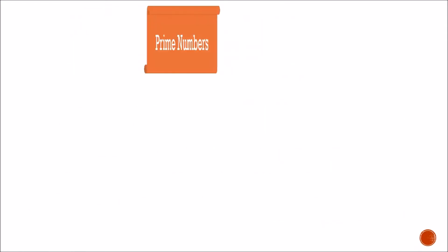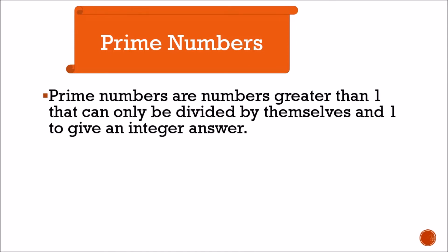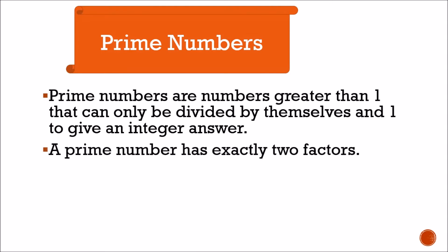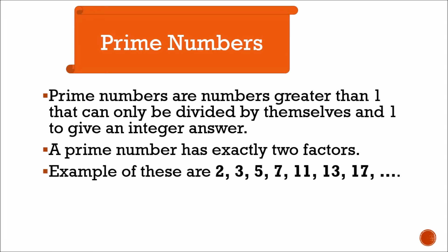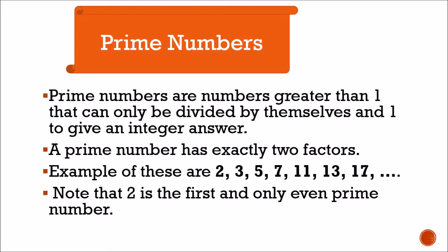Next is prime numbers. What are prime numbers? Prime numbers are numbers greater than 1 that can only be divided by themselves and 1 to give an integer answer. A prime number has exactly two factors. Examples are 2, 3, 5, 7, 11, 13, 17, and so on. Note that 2 is the first and only even prime number — all the others are odd numbers.